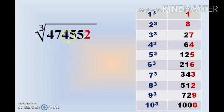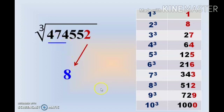Let's see another example: the number 474,552. This number ends in 2, and we know that if a number ends in 2, the cubic root ends in 8, so we write 8 as the units digit. If we skip 3 digits from the right, the remaining number is 474. The number 474 falls between the range 343 and 512. Taking the lower range, the corresponding cubic root is 7. So the answer is 78, found within 2 seconds.